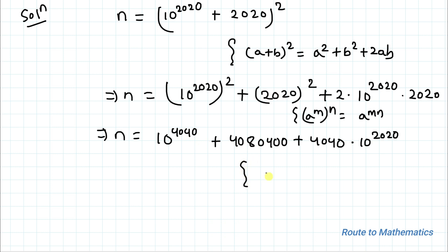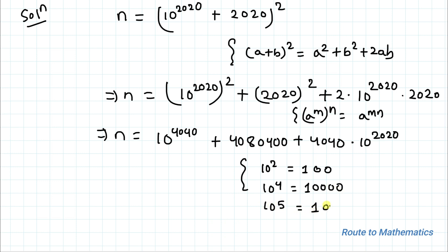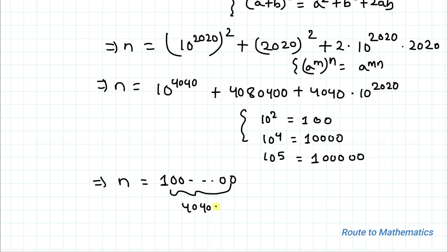Now, 10² = 100, 10^4 = 1 with 4 zeros, 10^5 = 1 with 5 zeros. So 10^4040 is simply 1 with 4040 zeros. We can write n equals 1 followed by 4040 zeros, plus 4,080,400, plus 4040 × 10^2020.